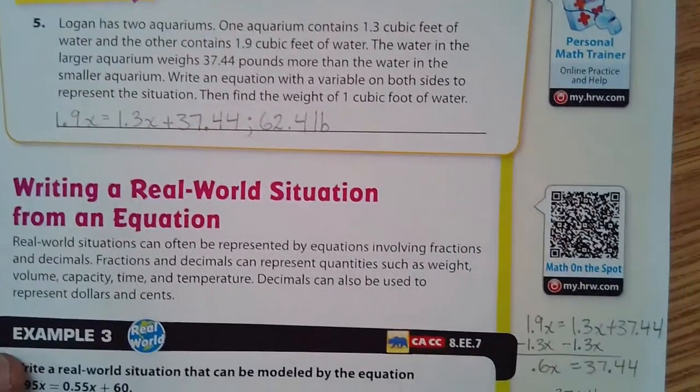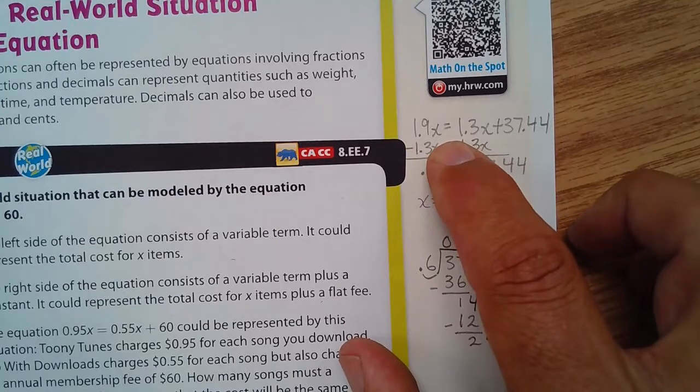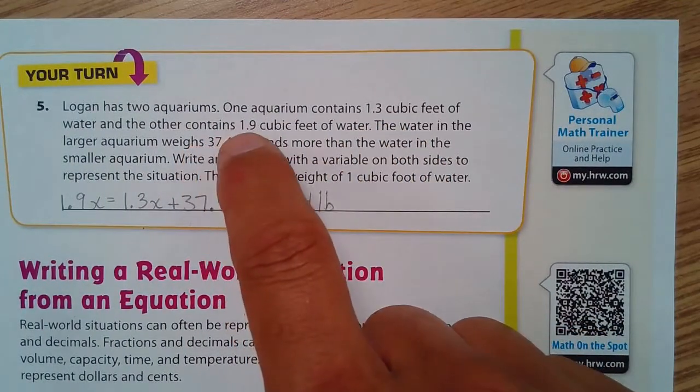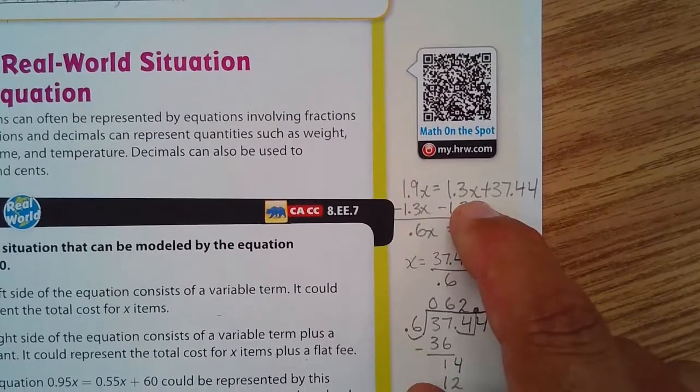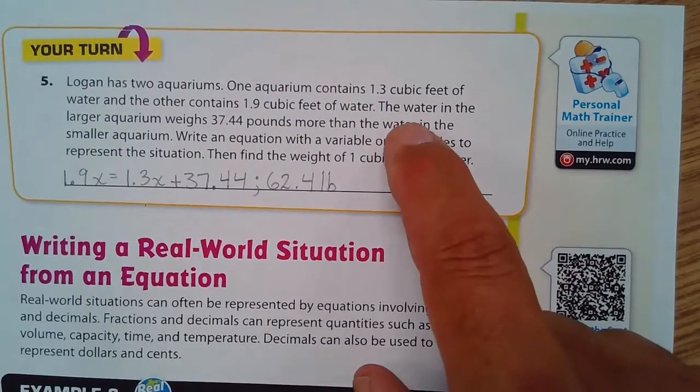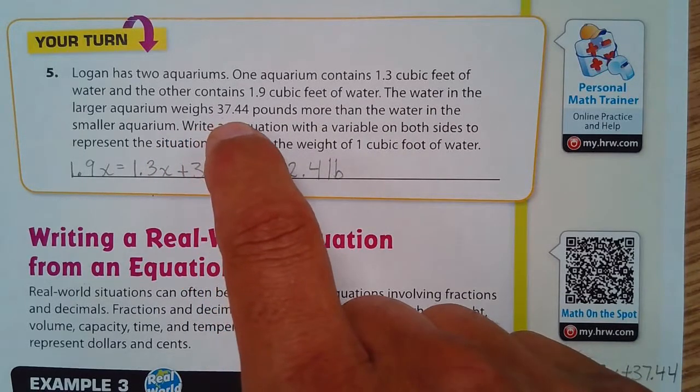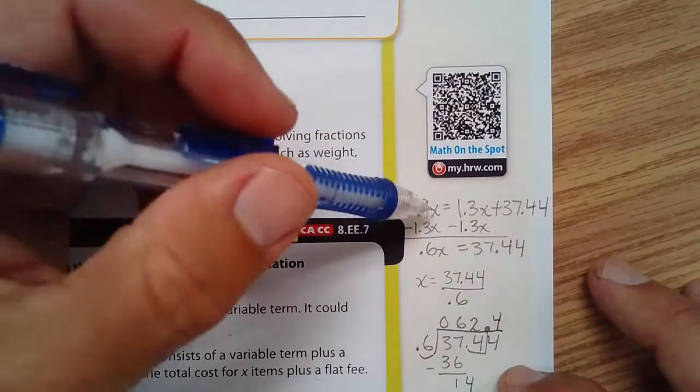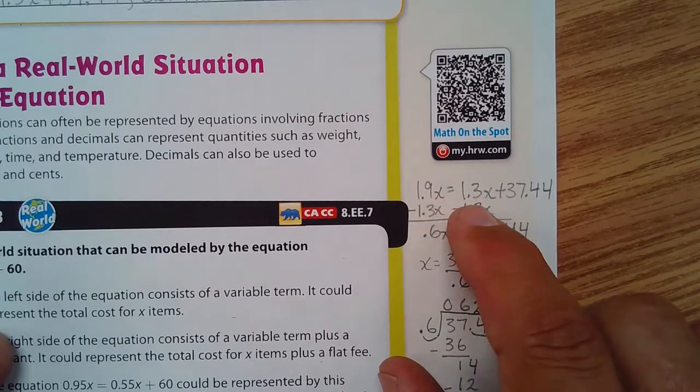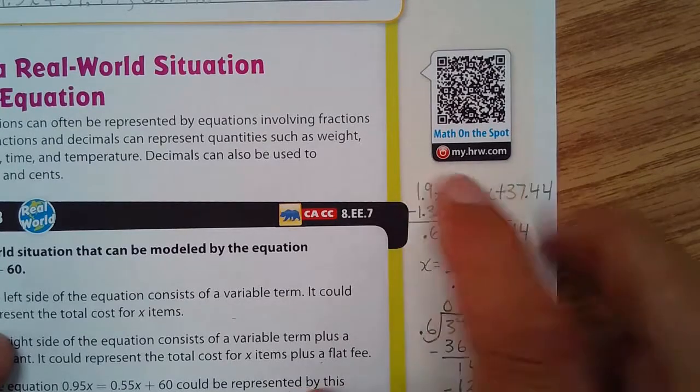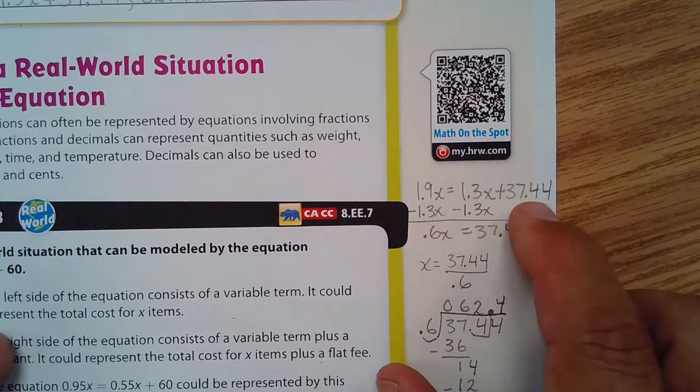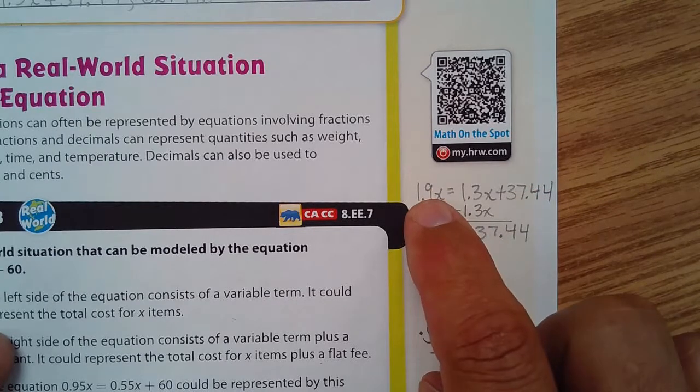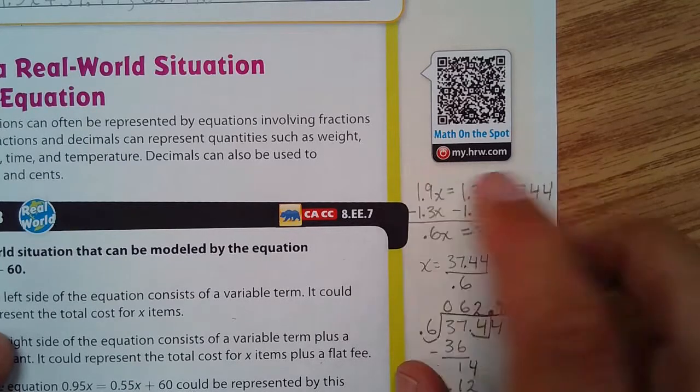Here's my equation. I want to explain how I arrived at that. One aquarium has 1.3 cubic feet of water, and the other has 1.9 cubic feet of water. The water in the larger aquarium weighs 37.44 pounds more than the one in the smaller aquarium. So this one weighs more than this one. How much more? By that much more. So to make the two sides equal, we have to add that amount to the smaller one, and once we add that amount to the smaller one, they are now the same size. Because some students might think, oh well, I'm going to add the 37.44 to this, but no. For them to be the same, we have to add it to the smaller one.